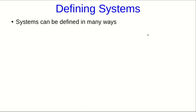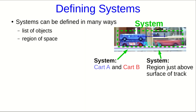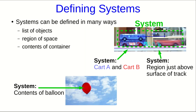Frequently we're not interested in just energy in general, but in the energy of a particular set of things. We need to think about defining systems, and there are many ways to do so. You could define it as a list of objects, such as a pair of carts, or for the same thing you could define it as a region of space — say the region just above the surface of the track, which includes the carts but also the air. You can also define it as the contents of a container, which will be useful when talking about heat engines. There are many more ways, including combinations of these.